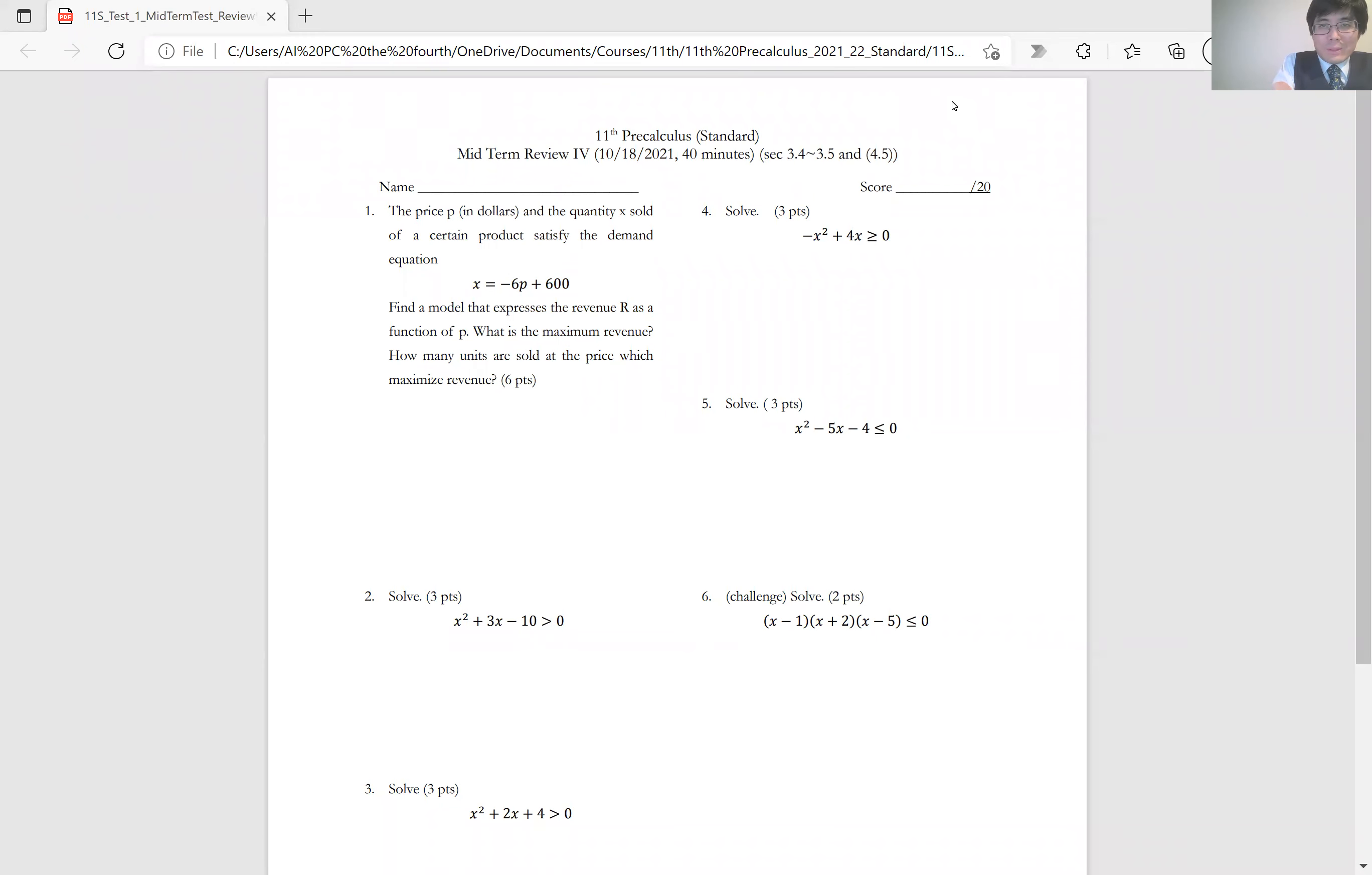So first of all, the first question is find the model to find the revenue. The revenue can be found as a product of a number of units sold, which is x in this case, multiplied by the price of each item, which is p. So the revenue is x times p.